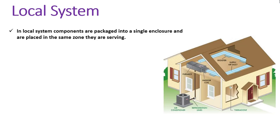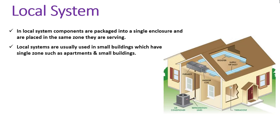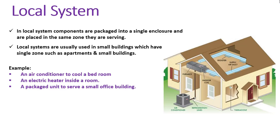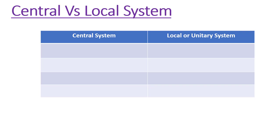In a local system, components are packaged into a single enclosure and placed in the same zone they are serving. Local systems are usually used in small buildings with single zones, such as apartments and offices. Examples of local systems include an air conditioner to cool a bedroom, an electric heater inside a room, or a package unit to serve a small office building.